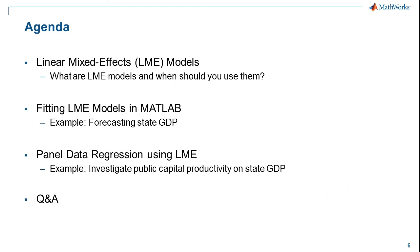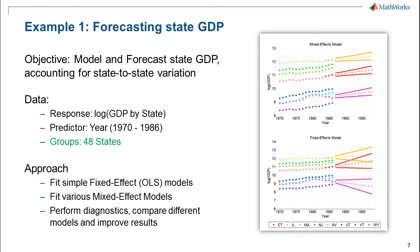Let's go through a code example to see how we can fit these models in MATLAB. The objective is to model and forecast GDP of states in the US. The response will be the log of GDP by state, the predictors are years from 1970 to 1986, and the grouping variable is state — 48 different states. We'll start with simple fixed effects or ordinary least squares models and then fit linear mixed effect models, perform diagnostics, compare models, and evaluate forecast results.